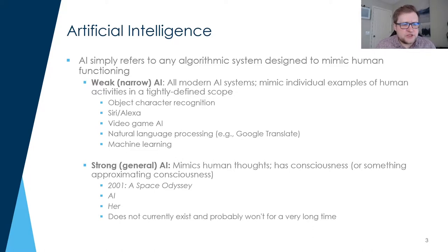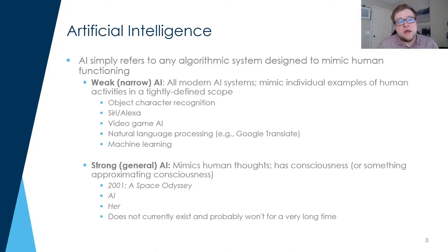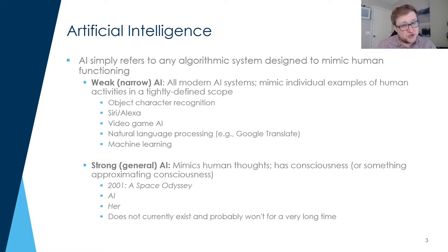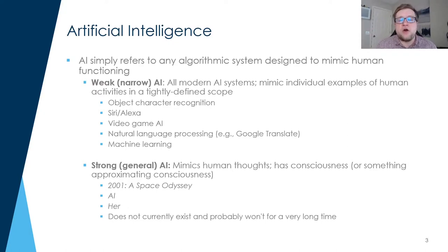Siri and Alexa are technologies that seem to be communicative artificial intelligences we're talking to, but in reality are quite narrow. In most cases, those technologies are just listening for keywords or key phrases, and they are constantly improving the databases of new phrases and functionality. But those are being programmed — those are being actually selected. It's not as if Siri and Alexa are capable of free thought. They are only capable of processing the kind of data and information that they've been told to process.